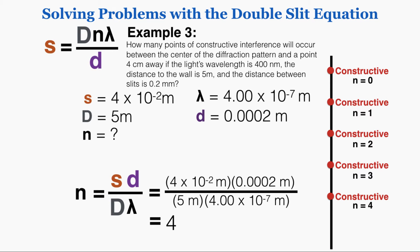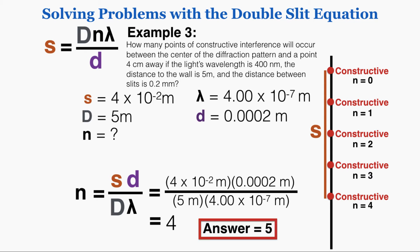Visualizing that quickly: if the top dot is the n equals 0 central point of constructive interference, and s goes all the way out to n equals 4, that actually means five points of constructive interference occur along s. So n equals 4, but s also includes n equals 0, meaning there are actually five points of constructive interference in total.